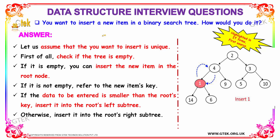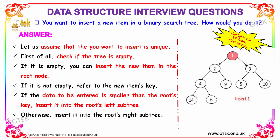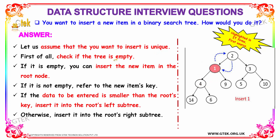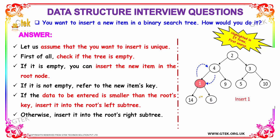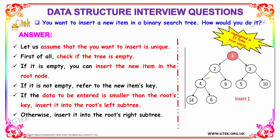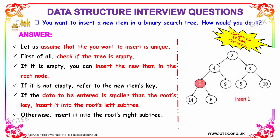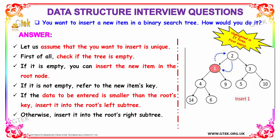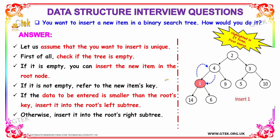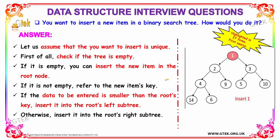Our next question is: you want to insert a new item in a binary search tree — how would you do it? First, check if the tree is empty. If it is empty, insert the new item in the root node. Otherwise, refer to the new item's key. If the data to be entered is smaller than the root's key, insert it to the root's left subtree; otherwise insert it to the right subtree. Here, 1 is less than the root and less than 4 and less than 2, so it is placed accordingly. These kinds of questions are highlighted in IT firms like FirstSource.